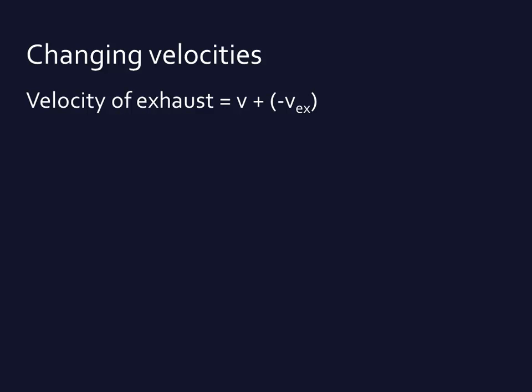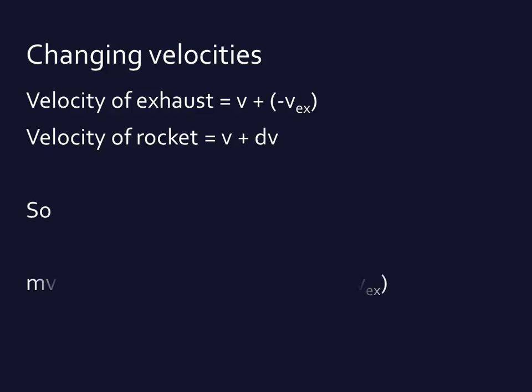At some point, perhaps the velocity of the exhaust would be more than the velocity going forward, and in that case you would begin to have a truly negative velocity. So the velocity of the exhaust is going to be the velocity of the rocket minus the velocity of the fuel going out the back. The velocity of the rocket is going to be v plus dv — that is the incremental change in velocity going forward — which gets into a little bit of calculus. So there's a conservation of momentum, and momentum equals mass times velocity.